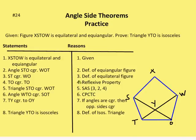So our first statement is the given: XSTOW is equilateral and equiangular. Then we say angle STO is congruent to angle WOT, by definition of an equiangular figure — all the angles in the figure are congruent. Then ST is congruent to WO by definition of an equilateral figure — all sides are congruent. Then TO is congruent to itself by the reflexive property.